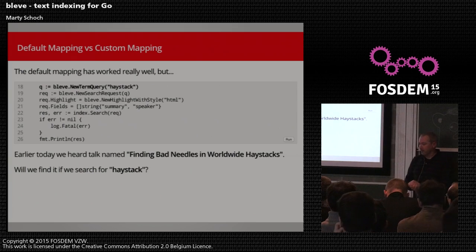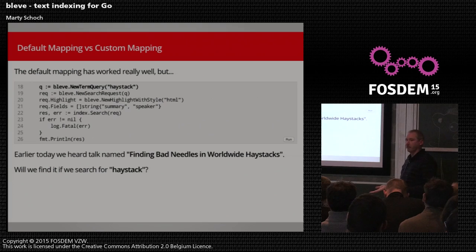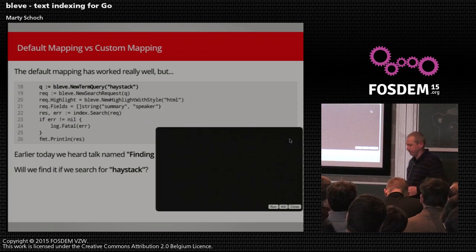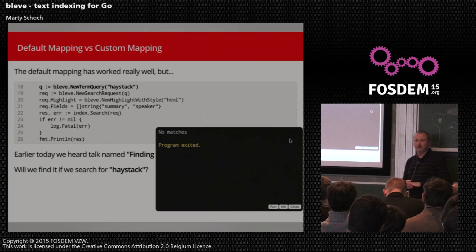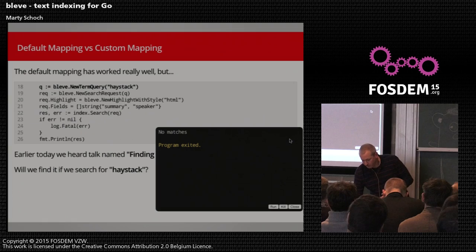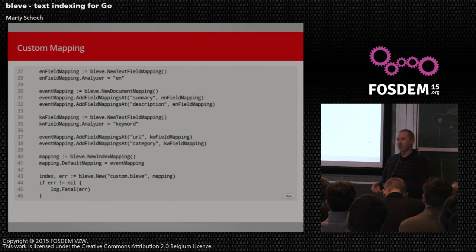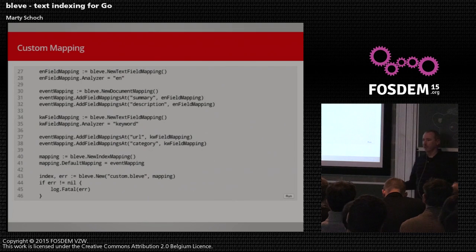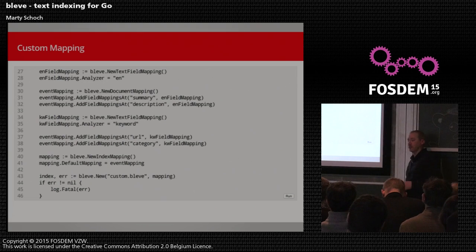There was a talk earlier today: 'Finding Bad Needles in Worldwide Haystacks'. What if we wanted to search for just 'haystack'? Let's try it — it's not going to find it right now. As human beings we can look at this text and realize it's all in English. There are additional transformations we can make on English text to give us essentially higher recall on our search results.